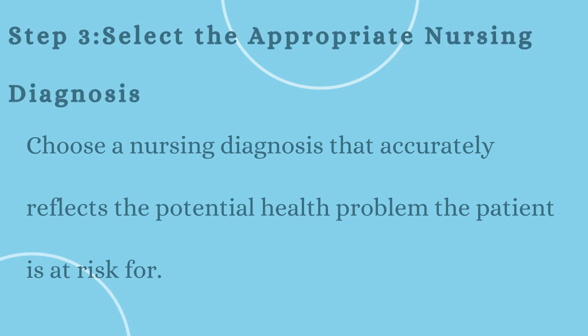Step 3: Select the appropriate nursing diagnosis. Choose a nursing diagnosis that accurately reflects the potential health problem the patient is at risk for. The nursing diagnosis should start with the phrase 'risk for' or 'potential for,' followed by the health problem or condition. For example, 'risk for impaired skin integrity' or 'risk for falls.'